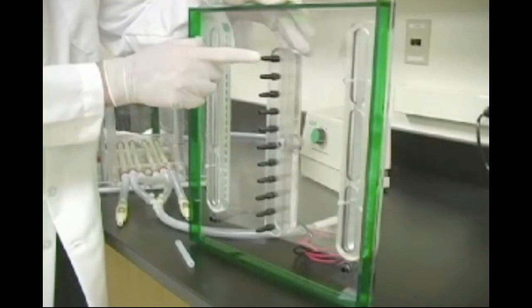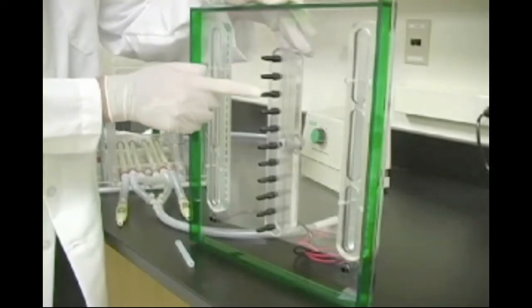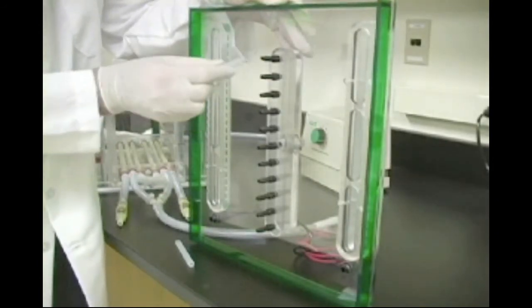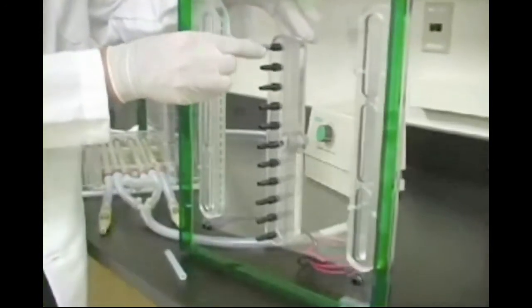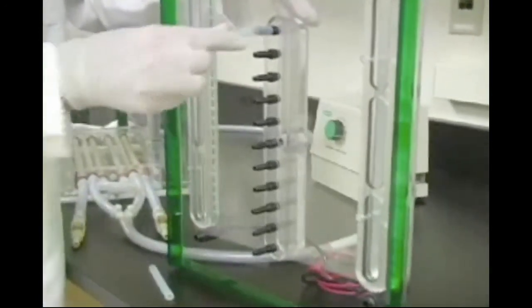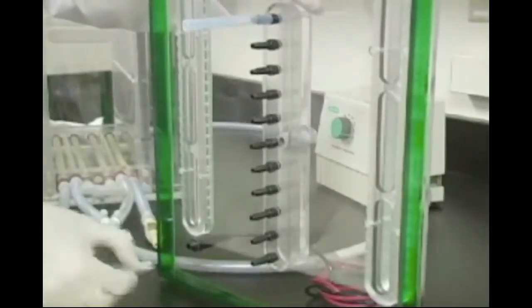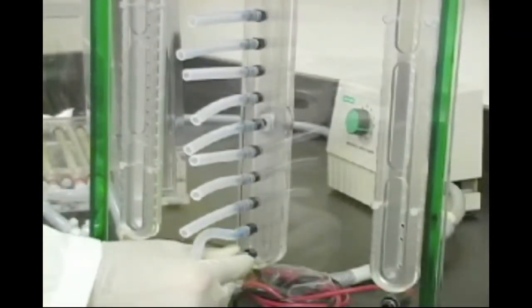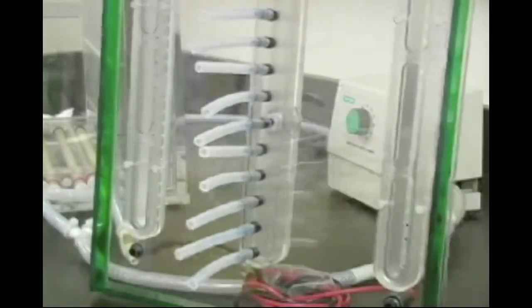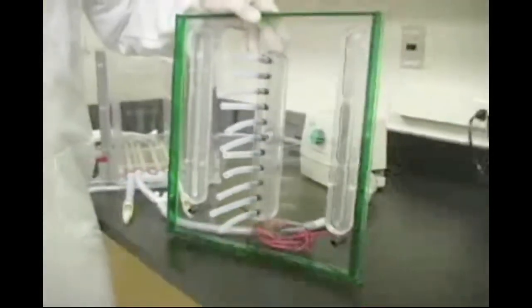When running shorter gels such as the Protean 2 Ready Gels or hand cast 20 by 20 centimeter gels, install the 11 pieces of manifold tubing onto the black fittings on the manifold in the lid. This is necessary for efficient buffer circulation and cooling. The manifold tubing should not be used if running larger gels such as the Protean Plus precast gels or hand cast gels using the Protean Plus hinged spacer plates.